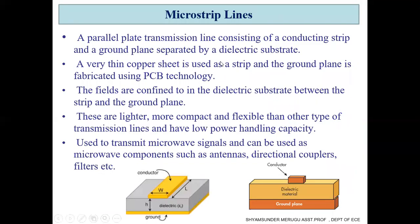The fourth type is microstrip lines. These structures consist of a ground plane and a microstrip line sandwiched by a dielectric material. A microstrip line is a parallel plate transmission line consisting of a conducting strip and a ground plane separated by a dielectric substrate. A very thin copper sheet is used as a strip, and the ground plane is fabricated using printed circuit board technology. The fields are confined to the dielectric substrate between the strip and the ground plane.